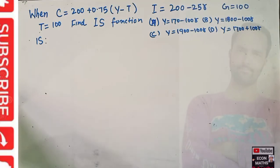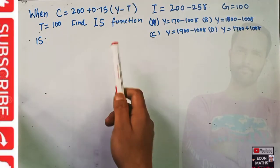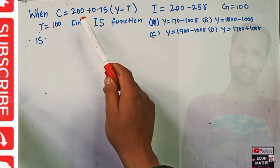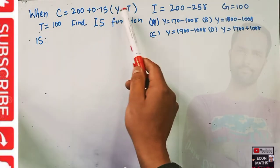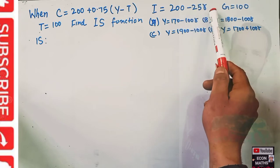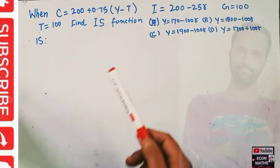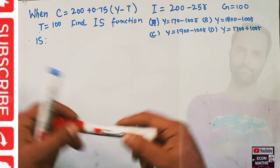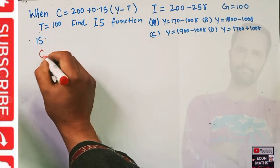In this question we will solve a problem on IS function. When consumption C = 200 + 0.75(Y - T), investment I = 200 - 25r, government expenditure G = 100, and taxes T = 100, find the IS equation.